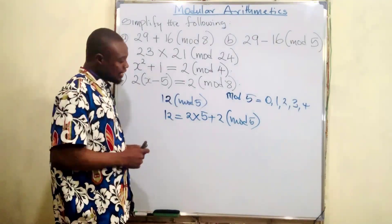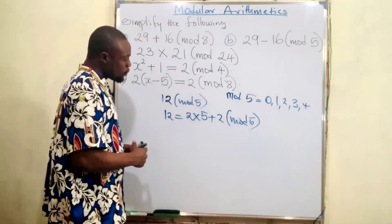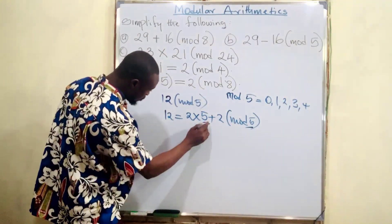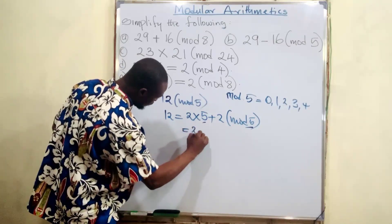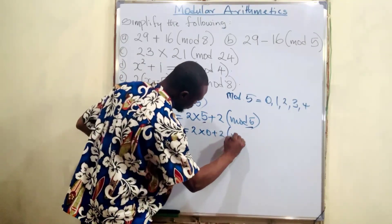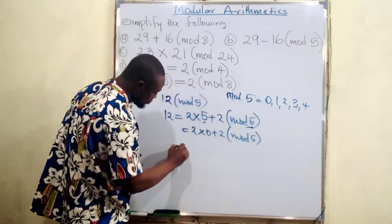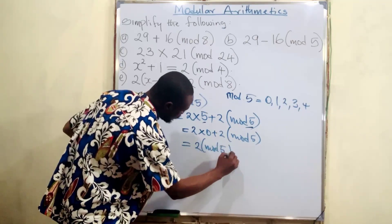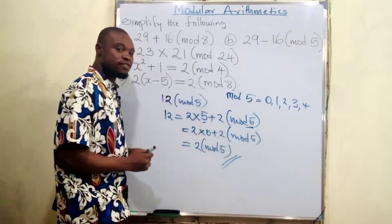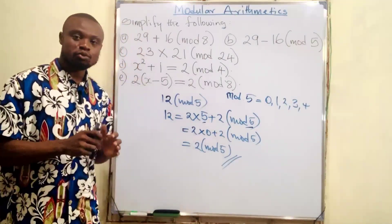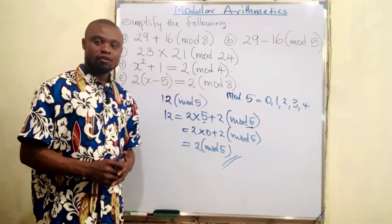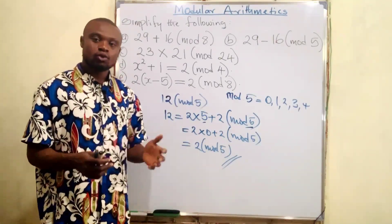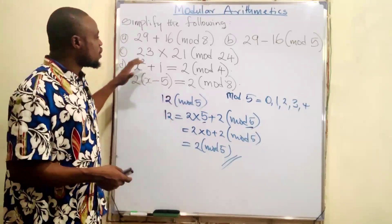So 12 is now expressed as two times five plus two, all in mode five. Two times five is ten, and ten plus two is twelve. Since there's no five in mode five, five becomes zero. So we have two times zero plus two in mode five, which gives us two. Therefore, 12 mod 5 has been reduced to two mode five. This is how to solve questions in modular arithmetic.